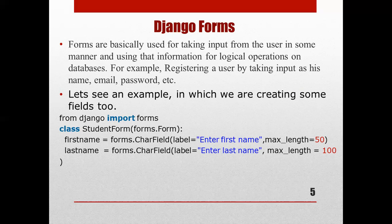Here we will see one example for creating fields for the user. We import from Django forms, then create a class: class StudentForm(forms.Form). Inside, you can see two fields: first_name and last_name. first_name is set to forms.CharField with a label, and last_name is similarly a CharField. The CharField is used to create HTML text inputs.